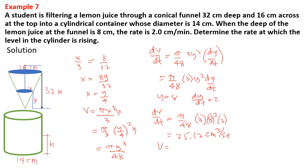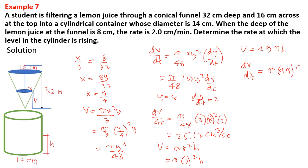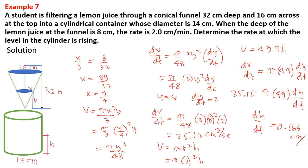Volume of the cylinder equals pi r squared h equals pi times 7 squared times h, so volume equals 49 pi h. Therefore dV over dt equals 49 pi times dh over dt. Setting 25.12 equals pi times 49 times dh over dt, solving gives dh over dt equals 0.163 cm per minute.